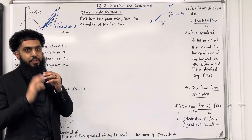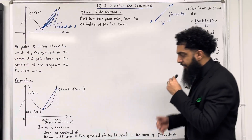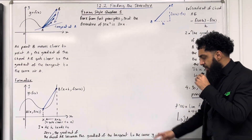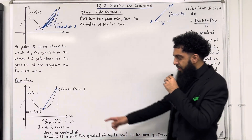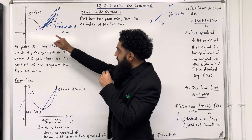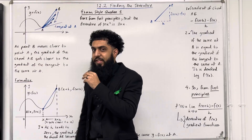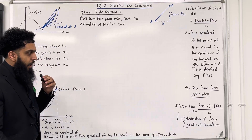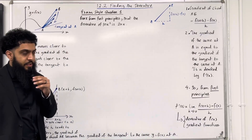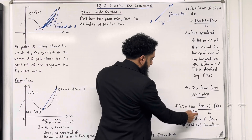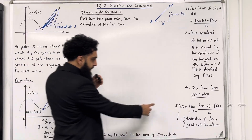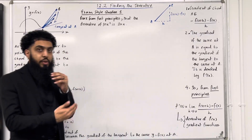This gradient is denoted by f dash of x. Step number three of differentiation from first principles: as h tends to zero, the gradient of the chord AB becomes the gradient of the tangent to the curve y equals f of x at A. Step number four: from first principles, f dash of x is given by the limit — lim is shorthand for limit, or limiting value — as h tends to zero, of f of x plus h minus f of x, all over h.